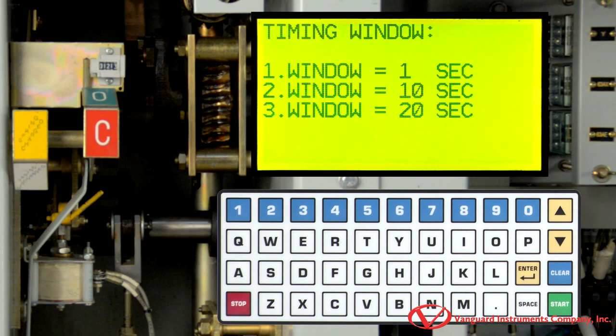On this screen, we will select the timing window. For this example, we will use a 1 second timing window by pressing the 1 key.